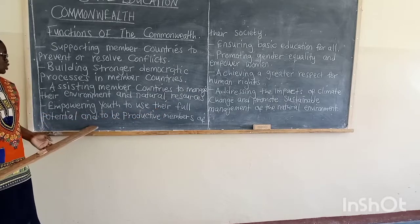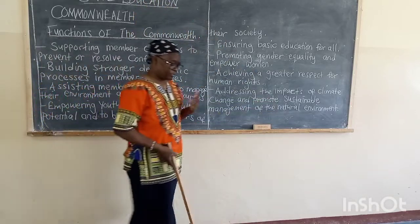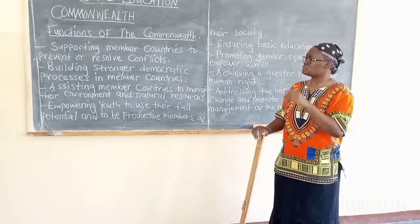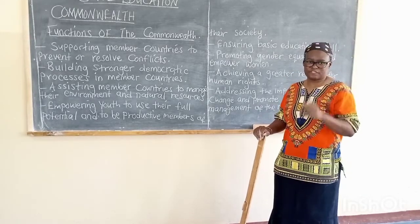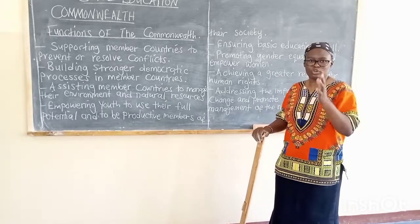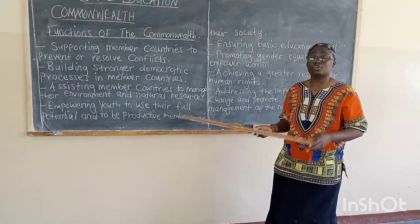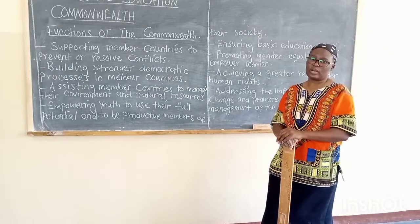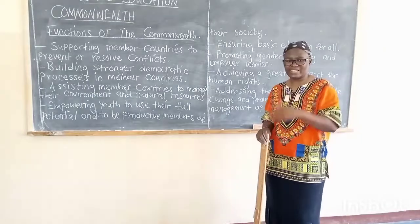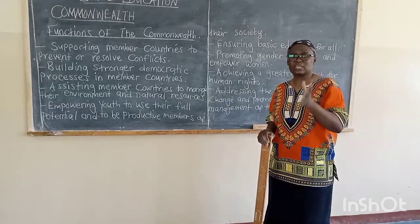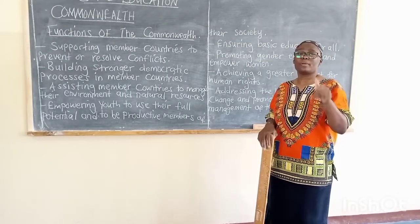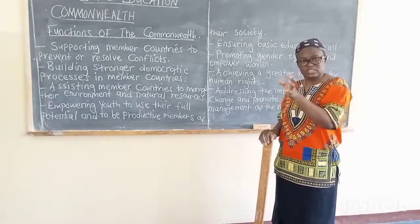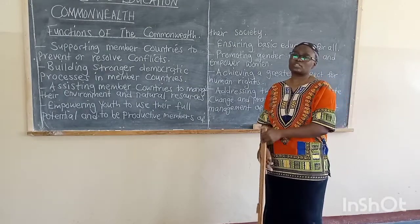Empowering youth to use their full potential and to be productive members of their societies. You are now in Grade 9 and you have not just learnt subjects in class, but also different skills. For example, if you are taking agriculture science, you can come up with a garden at the back of your house. Those doing home economics have learnt how to cook — maybe they can start making cakes for sale, or they have learnt how to sew. You should develop your full potential and make use of the gifts that God has given you.